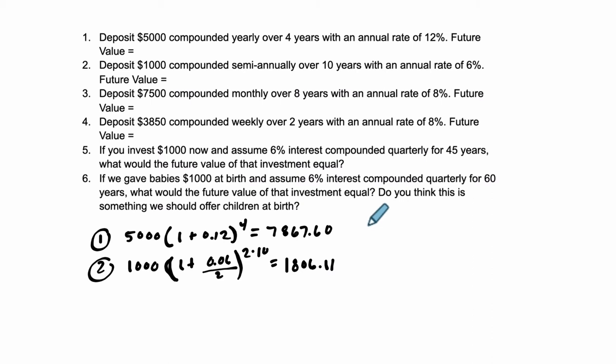Third one, we deposit $7,500, that's our present value, times 1 plus, it's at 8%, so 0.08. It's compounded monthly, so we divide it by 12. 8% divided by 12 is how much you're getting each month. 12 times a year because there are 12 months in a year, times 8 years. And that will get us our next future value.